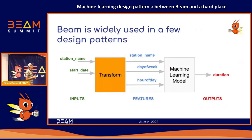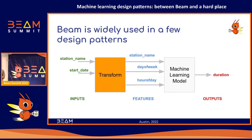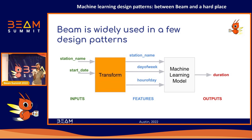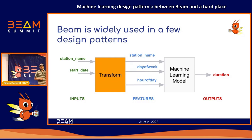Quite a few of those patterns use Beam. For example, one of the key problems is the idea of transformation. Let's say you're building a machine learning model to predict how long a bicycle is going to get rented. The inputs to the model are the station where you're renting the bicycle, the day of the week, and the hour of the day, and it predicts the duration.